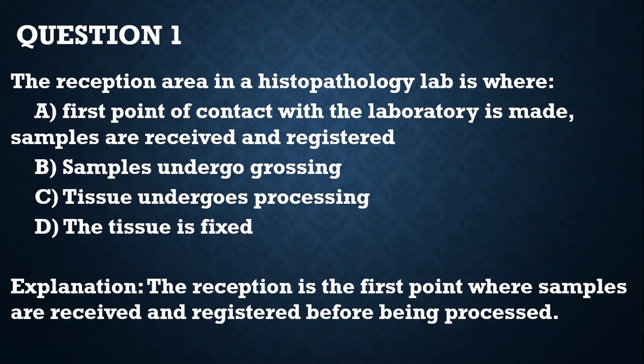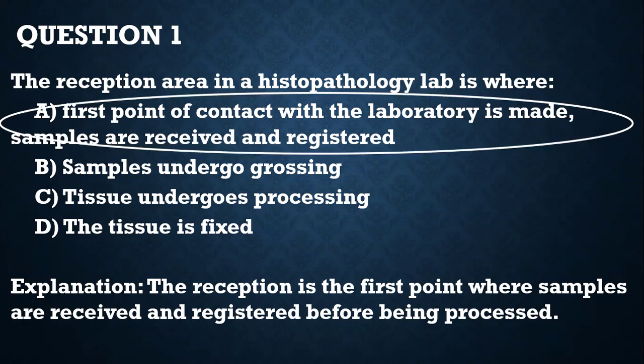Question 1. The reception area in a histopathology lab is where: A — first point of contact with the laboratory is made and samples are received and registered; B — samples undergo grossing; C — tissue undergoes processing; D — tissue is fixed. The answer is A.